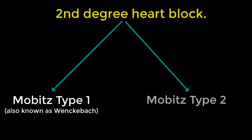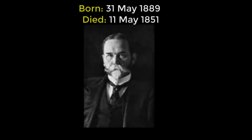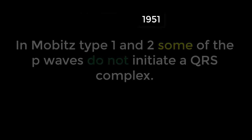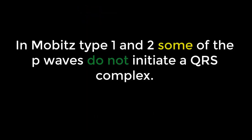You're probably wondering who Mobitz was — he's Waldemar Mobitz, a Russian-German physician who died in 1951. In both types, some of the P waves don't initiate a QRS complex. In Mobitz type one, also known as Wenckebach — and here's a picture of Carl Wenckebach, a Dutch anatomist who died in 1940 — the PR interval gradually prolongs.